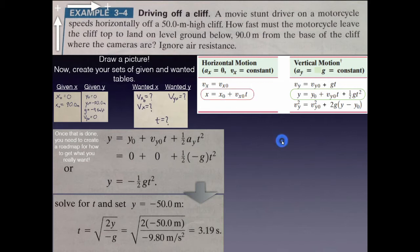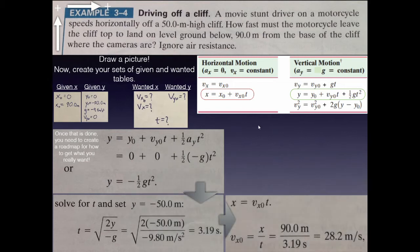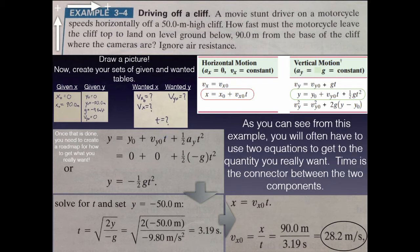Now I take that t = 3.19 s over to the horizontal equation. With x₀ = 0, the equation reduces to xf = vx₀·t. Dividing both sides by t and plugging in xf = 90 m and t = 3.19 s gives vx₀ = 28.2 m/s. The motorcycle must travel at that specific speed to land 90 meters away — ignoring air resistance. This shows you need to use one equation just to get a value needed to find the actual answer; every equation used must have only one unknown.